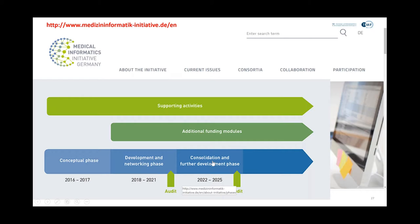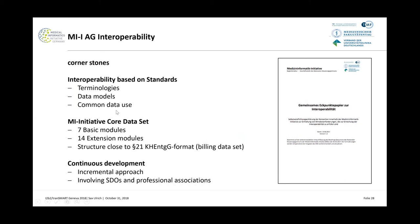For interoperability we need terminologies, and I think we are shortly before a national license for SNOMED CT in Germany. When I came to the US in 2003, there was already a national license for SNOMED CT; in Germany it's still not there, which is really difficult. We are using different data models. For the core dataset we defined that everybody has to deliver a core dataset: seven basic modules and 14 extension modules. The structure is based on billing data — dirty but quite usable — and it's an incremental approach starting with 80% and doing the rest on the way.